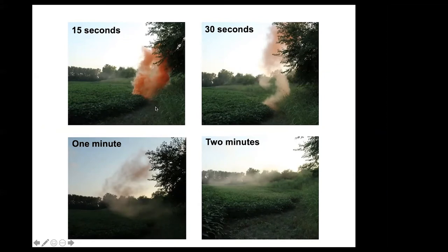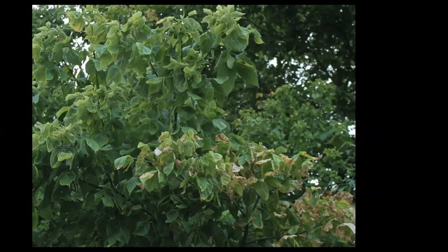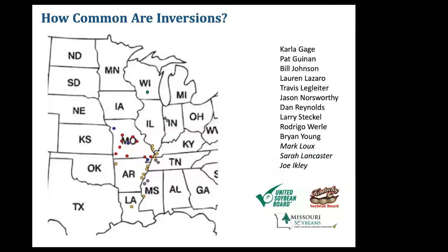One thing I want to point out is that the trees on this side, if you look at them, show signs of possible dicamba and glyphosate injury with leaf cupping and some chlorosis and necrosis on the leaves, at heights similar to where that smoke bomb started to come back down. This tells me that this pattern is probably not rare — it's likely a common occurrence in this field, and that air movement within a field can have a fairly common pattern unless there's an extraordinary weather event that day.